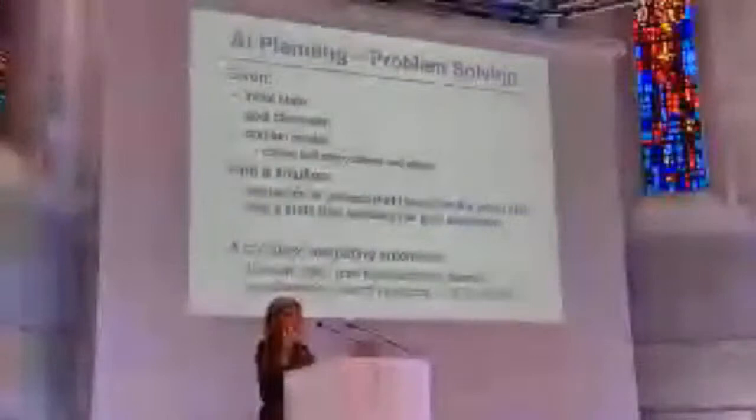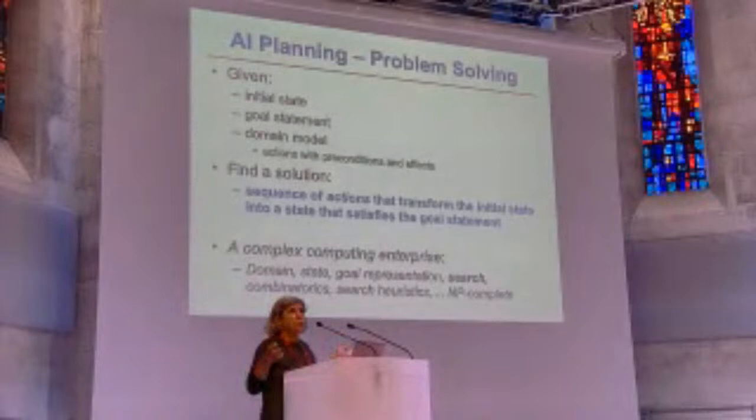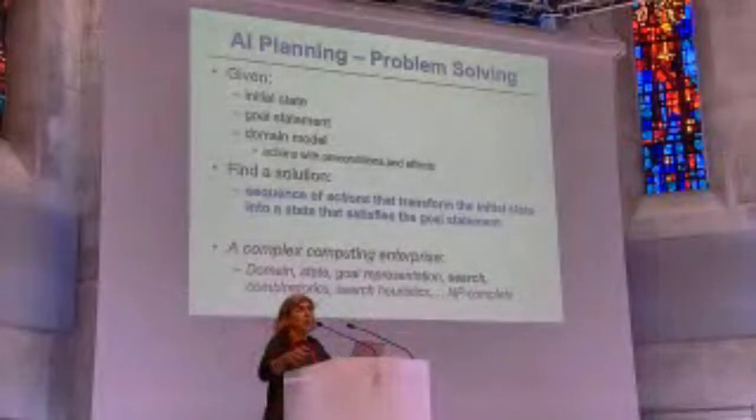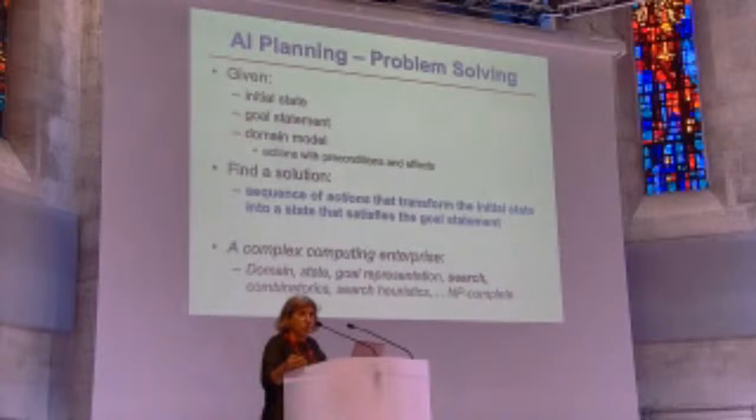So now you have this problem: these are the things you can do — you can paint, you can open the door, you can cook. Every single one of these actions is defined in terms of its preconditions and its effect. You are given an initial state, this is where I start, this is where I want to end, and the problem becomes: how do we find a sequence of actions that takes me from the initial state to this final state in which the goal statement is satisfied.